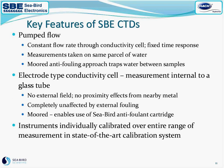With pumped flow, we have a constant flow rate through the flow path, which allows each sensor a fixed time response instead of variability driven by currents or waves. With our anti-fouling approach, this pumping traps water in the flow path between samples. We use an internal electrode type conductivity cell — there's no external field, no proximity effects due to nearby metal. The conductivity measurement is completely unaffected by external fouling because the water sample is taken inside the instrument. And each instrument receives individual calibration over the entire range of measurement in a state-of-the-art calibration system.